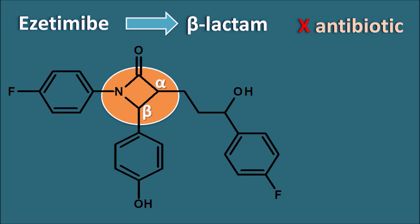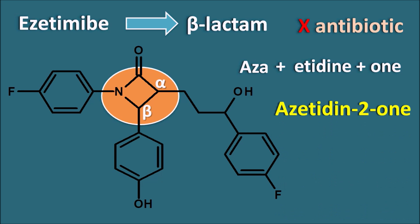This beta-lactam ring is also considered as a heterocyclic ring with a four-membered ring system. Since it contains nitrogen, we call it 'az', and because it is a four-membered ring system, we add the suffix 'etine'. But since it is saturated, the suffix becomes 'etidine', plus there is a ketone on the ring, so we add the suffix 'one'. The complete name of this ring is azetidin-2-one, numbering starting from the nitrogen with the ketone at position 2.